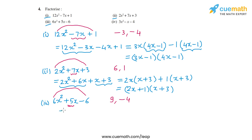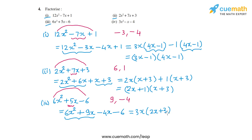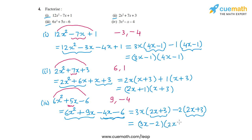So I split 5x as 9x minus 4x, giving 6x² plus 9x minus 4x minus 6. From the first pair I take out 3x common, leaving 2x plus 3. From the second pair I take out minus 2 common, also leaving 2x plus 3. Now I have 2x plus 3 common, so I take that out and get 3x minus 2 times 2x plus 3. This is the factored form of the third polynomial.